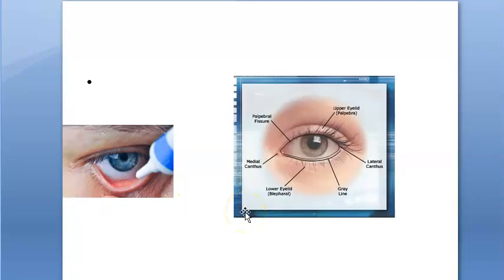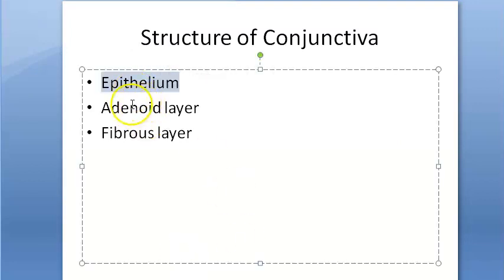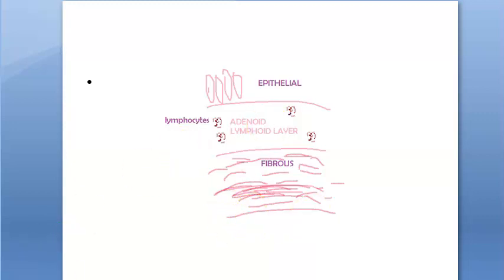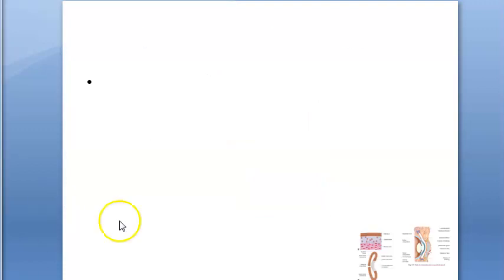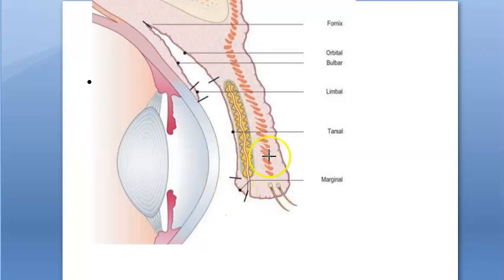We also saw what the conjunctival sac is, what the palpebral fissure is, and then we looked at the structure of conjunctiva: the epithelium, the adenoid layer, and the fibrous layer. The fibrous layer is usually thicker than the adenoid layer, except in one place — in the tarsal conjunctiva the fibrous layer is very thin. You can also see yellow streaks around it representing the tarsal glands.